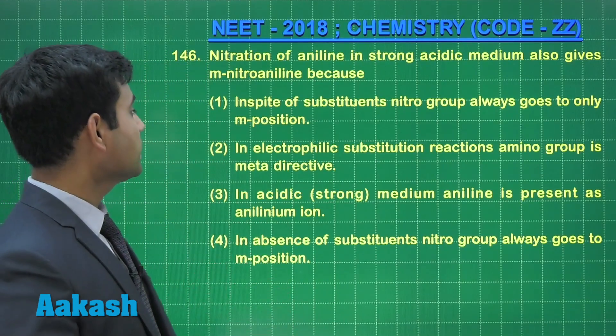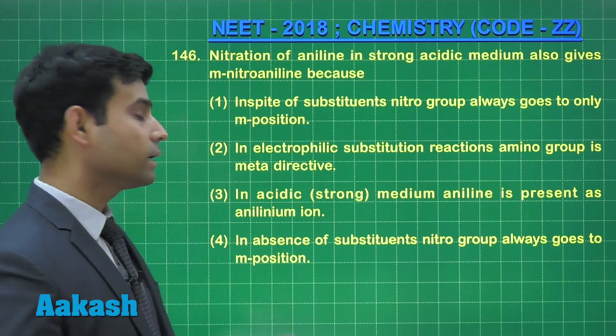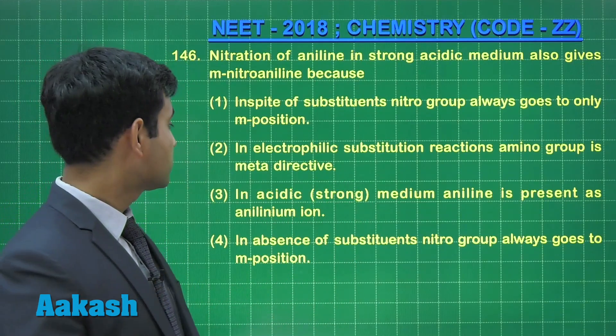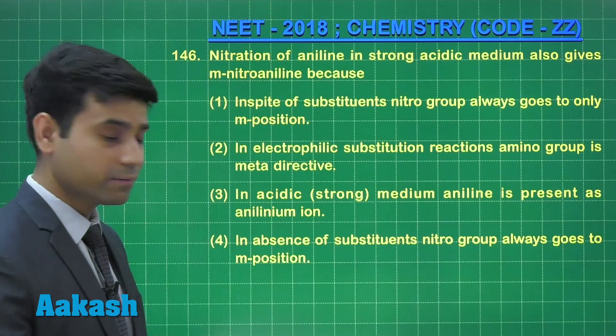In spite of substituent, nitro group always goes to only meta position. Second option is in electrophilic substitution reaction amino group is meta directive.